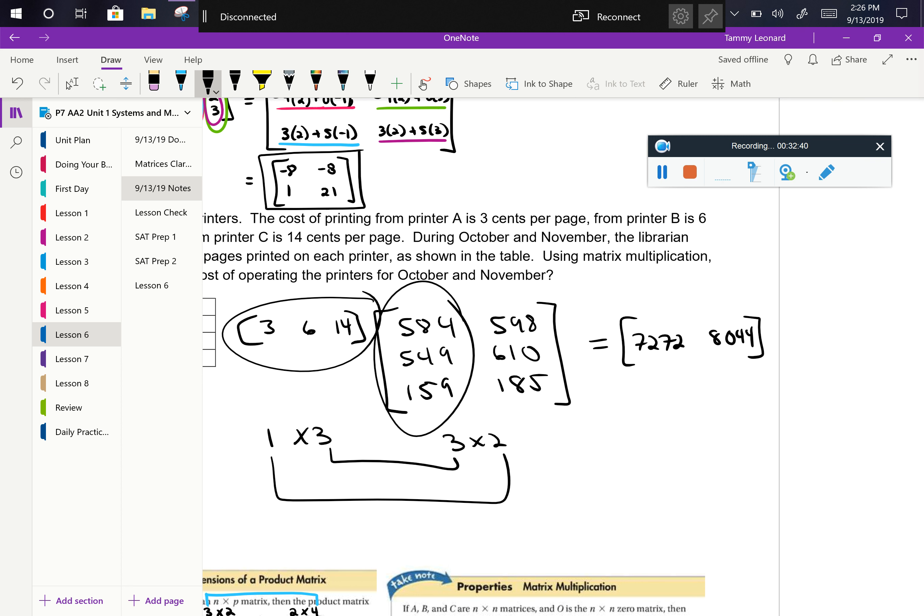Absolutely. The outer dimension. So take a sec, do that in your calculator and tell me what you get. 7272 and 8044. Okay. So if we think about that, we've got the number of rows from the first one and the number of columns from the second one. So the rows represented the printers, but we've collapsed them to be all the printers, right? Because the question was total cost. The columns represent each month and what we wanted to know was the cost for each month. So that's the information we just got out. But remember, the money was given to us in cents. So we would say the printing cost for October is how much? 72 dollars and 72 cents. And for November is how much? 80 dollars and 44 cents.